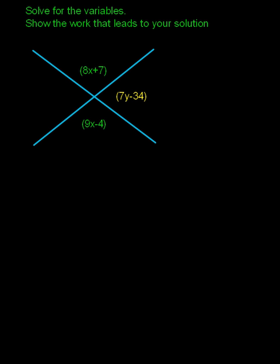I've got X's and I have Y's. Now when I take a look at my X variables, I want to take a look at their location. The X variable right here in this angle, 8X plus 7, is directly across from this other angle, 9X minus 4.